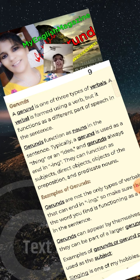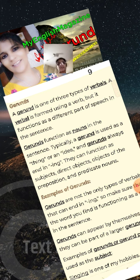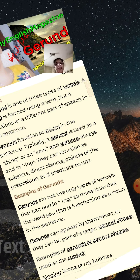A gerund is one of three types of verbals. A verbal is formed using a verb, but it functions as a different part of speech in the sentence. Gerunds function as nouns — typically used as a thing or an idea — and gerunds always end in ING. They can function as a subject, direct object, object of the preposition, and predicate noun. Gerunds are not the only verbals that can end in ING, so make sure the word you find is functioning as a noun in the sentence.